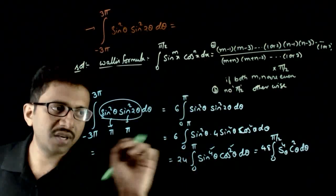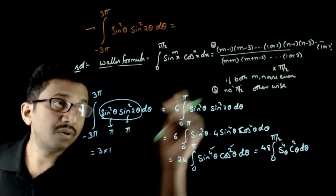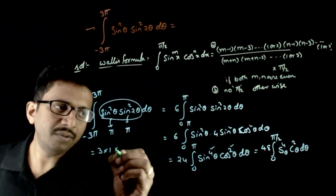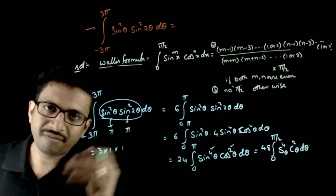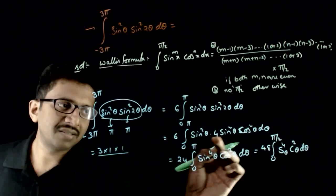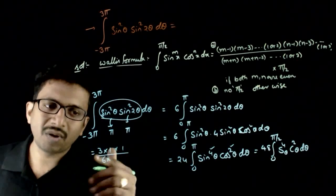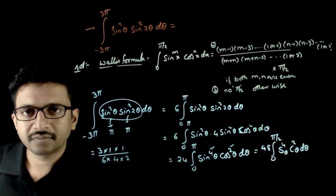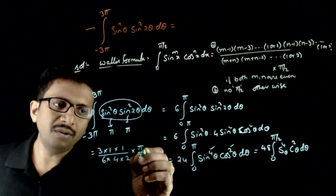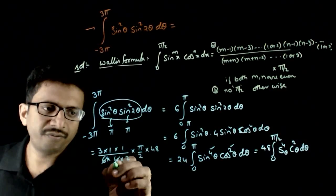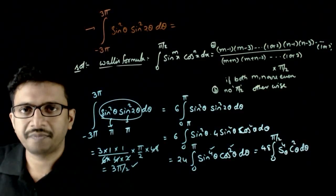Here, m equals four and n equals two — both are even — so I use the first formula. Starting with m minus one, that is four minus one equals three, then three into one from the numerator for sine. For cosine, n minus one is one, so the numerator from cosine contributes just one. The denominator starts with m plus n equals six, then six into four into two. This gives three into one into one divided by six into four into two, times pi by two. Multiplying by forty-eight: six fours are twenty-four, into two is forty-eight, and forty-eight cancels. So the answer is three pi by two.